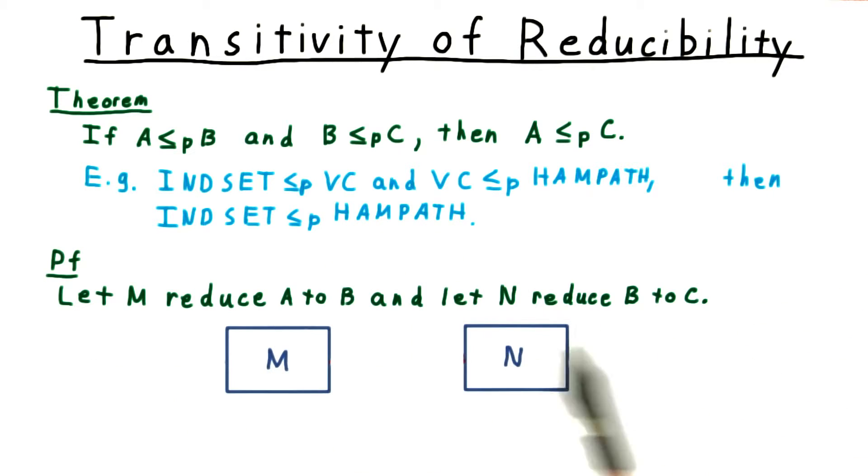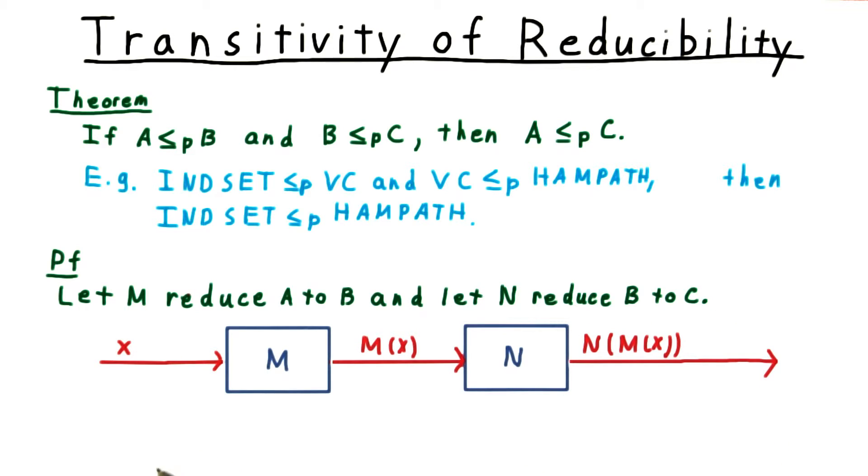Let's take a look at the proof of this theorem. We'll let M be the program that reduces A to B, and we'll let N be the program that reduces B to C. To turn an instance of the problem A into an instance of the problem C,